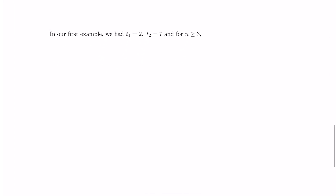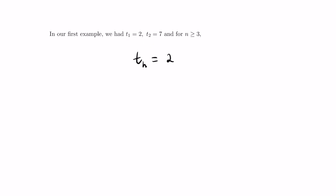In our first example, we're going to say t1 is 2, t2 is 7, and for all n greater than or equal to 3, we have a recursive equation: tn is twice t(n-1) plus 3 times t(n-2). So what's the nth term going to look like?